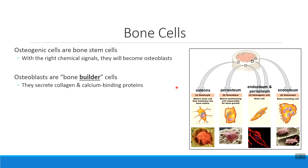Notice that my osteogenic cells are found on the outside of my bone in that thing called the periosteum, and also in the middle of my bone in that thing called the endosteum. This is how appositional growth works — how bones get wider by making new osteoblasts on the inside to build that bone tissue.